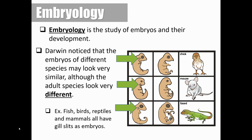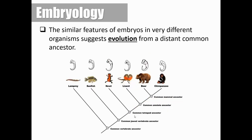We're going to start with embryology, which is what our little introduction activity was about. Embryology is the study of embryos and their development. One of the things Darwin noticed was that embryos of different species look very similar early in their earliest stages of development, while late in their development they look very different from one another. This idea that embryos look similar early on suggests that they must share a common ancestor. We can see here the chicken, the mouse, and the lizard — while they look very different, if you go all the way back to their earliest embryo stages, they all have gill slits and tails, suggesting they must share a common ancestor. The similar features of embryos in very different organisms suggest evolution from a distant common ancestor.